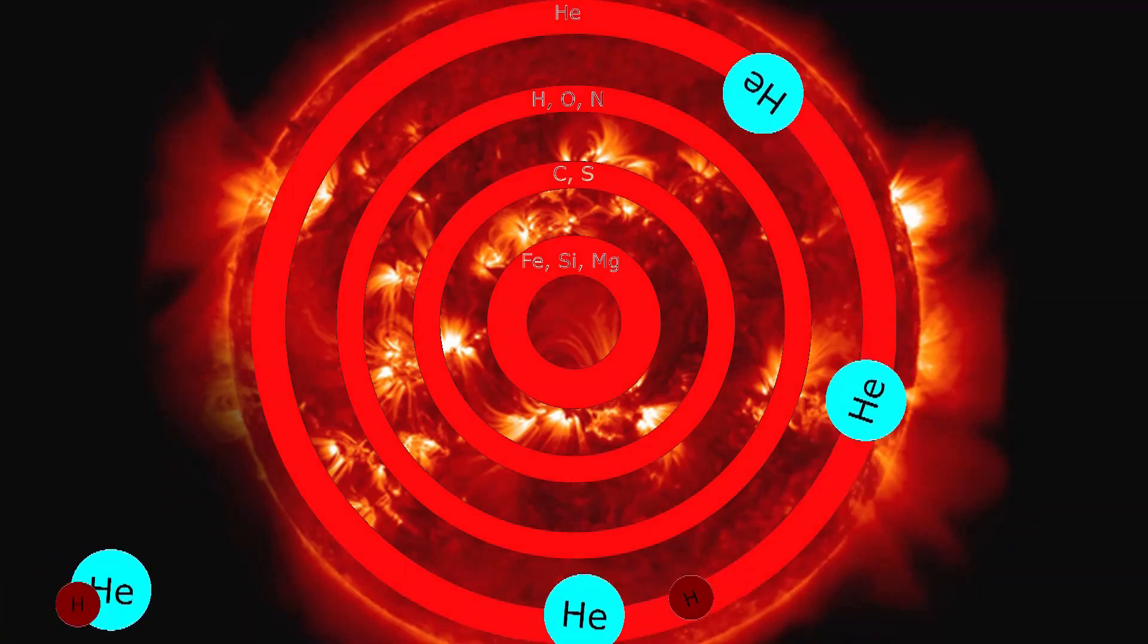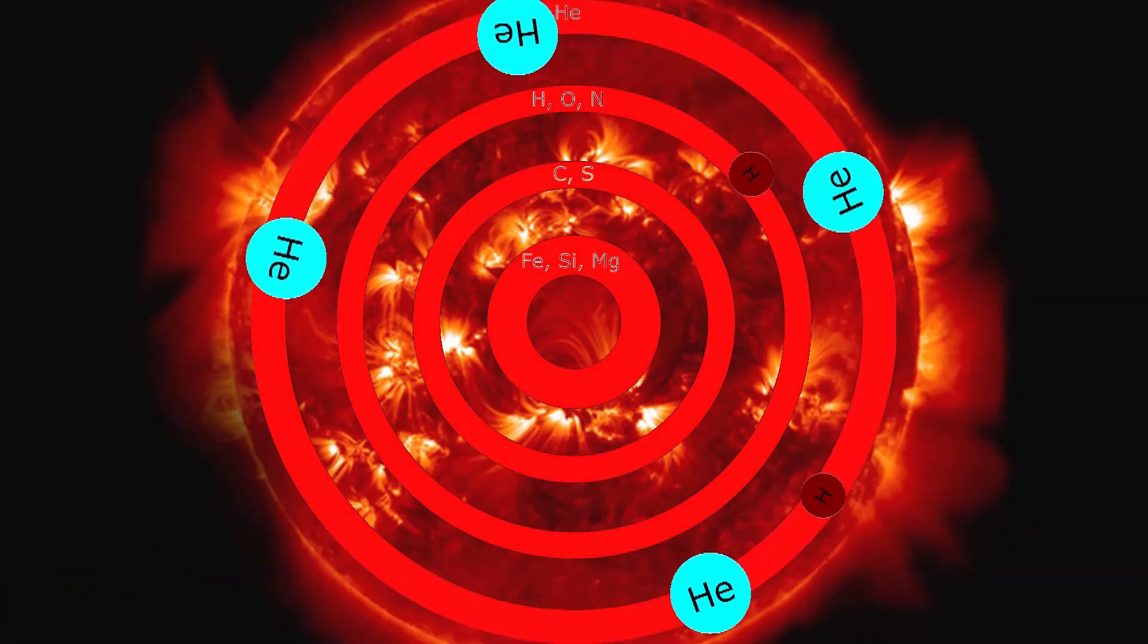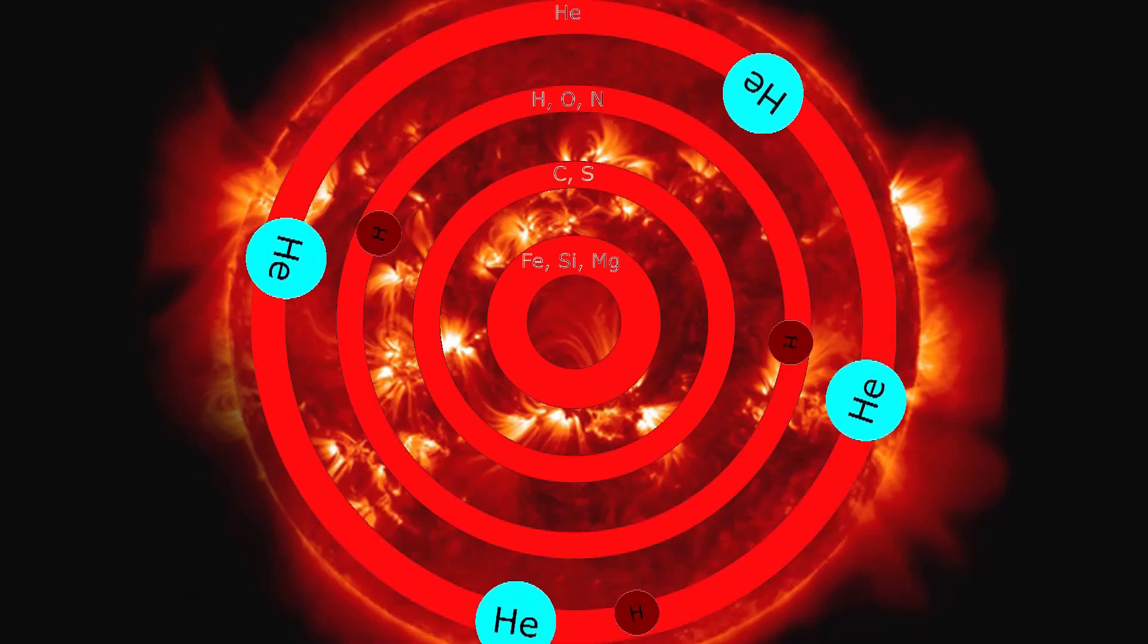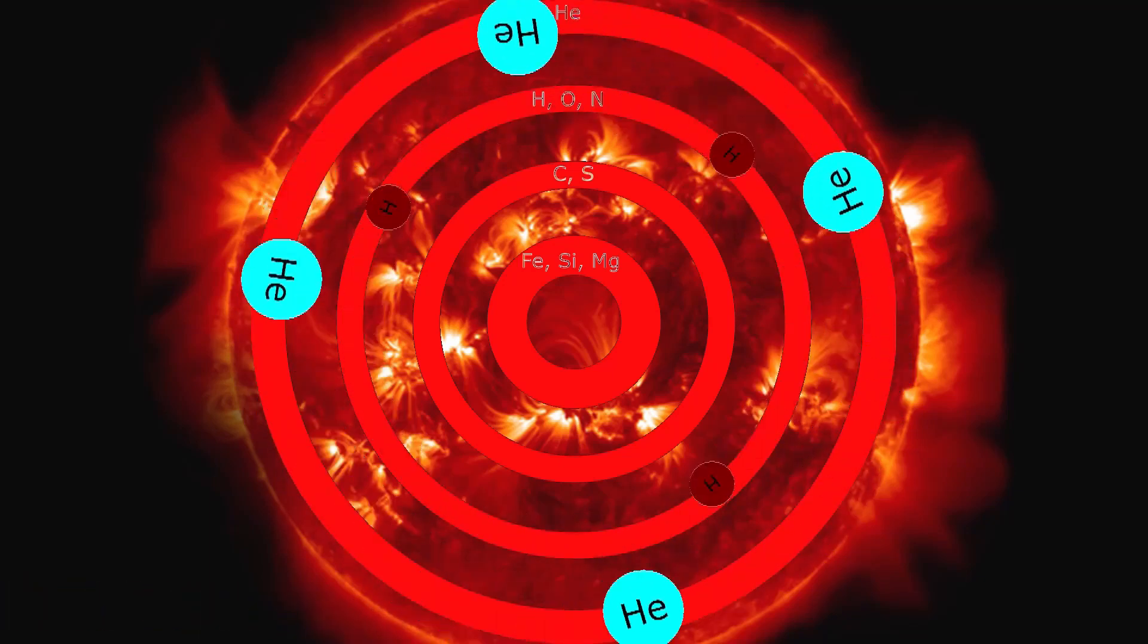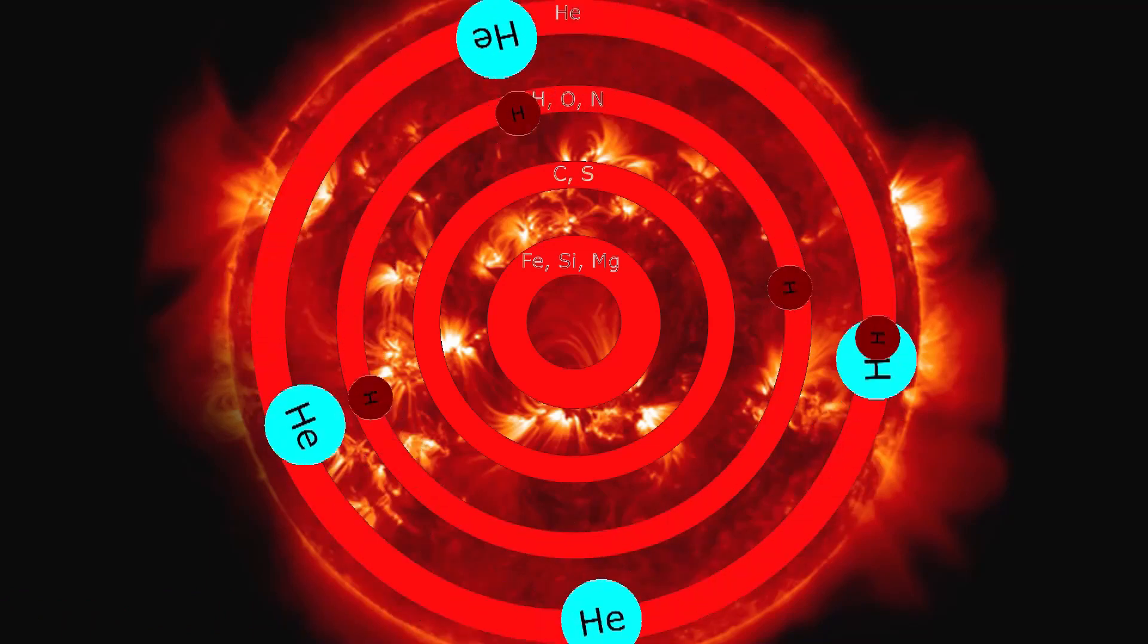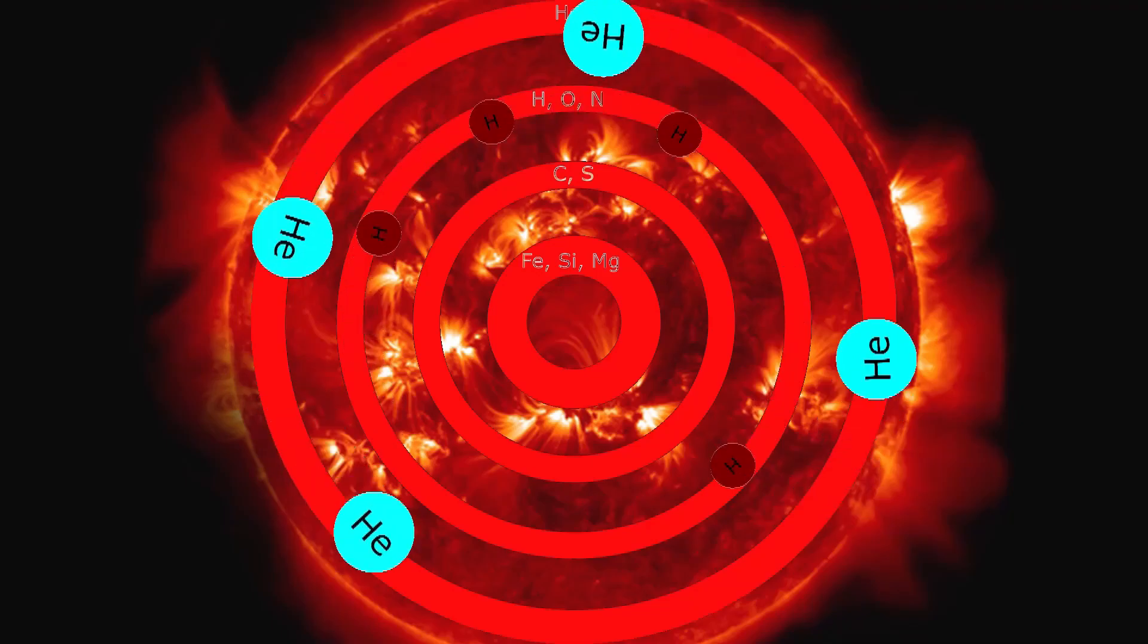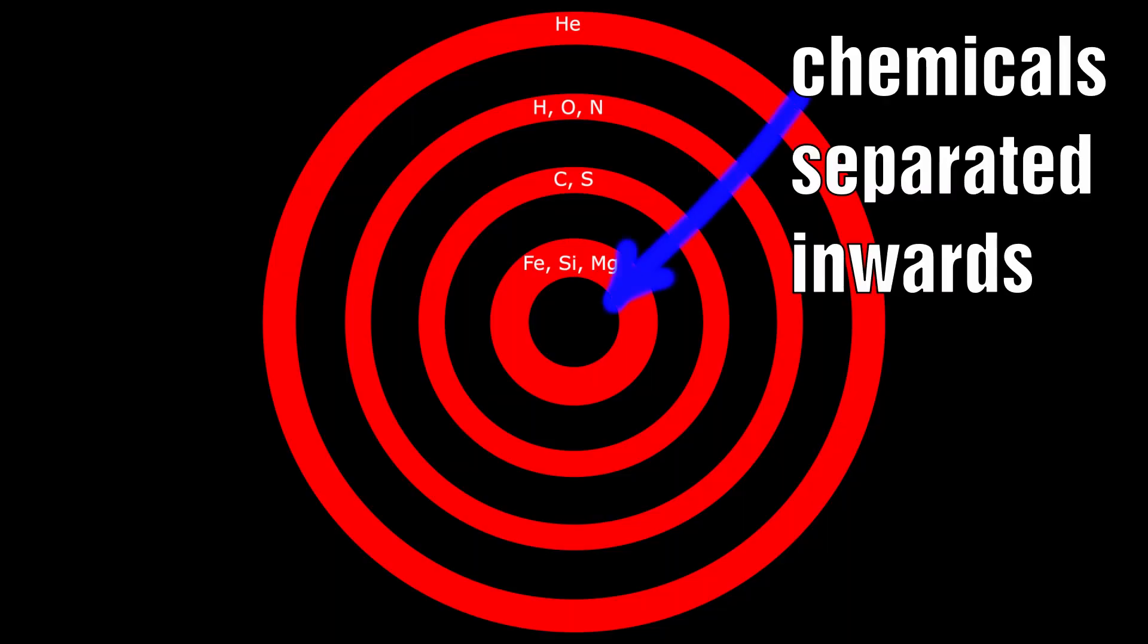Only those with low ionization energies will be drawn further and further in towards the center, as their electrons will be easily stripped away. As they approach the center, they too will recombine back into neutral matter, and this means that the matter will be chemically separated through this process.